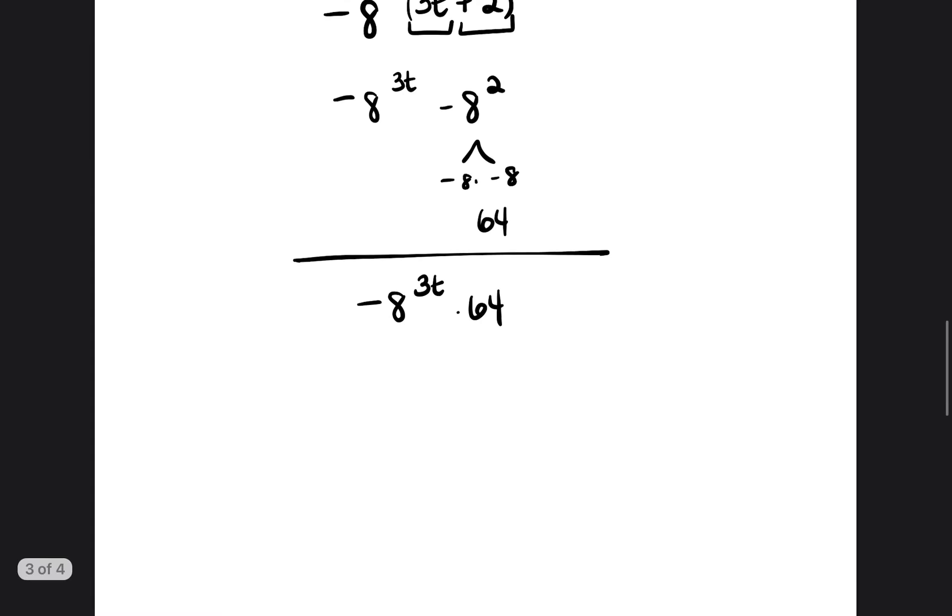So we can go ahead and break this apart further. Let's break apart the 3 and the t. So we'll do negative 8 to the 3rd power, and then negative 8 to the t power times 64.